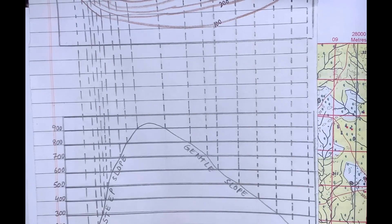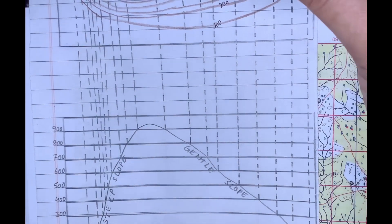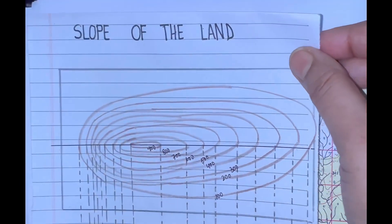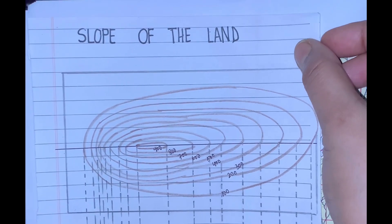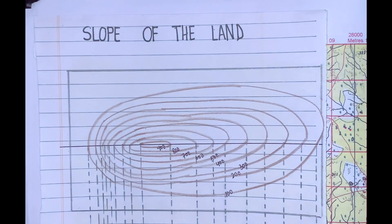Apart from these two, if the lines are uniformly spaced, then it represents uniform slopes. And if the lines are far apart from each other, then it means that the land is flat.